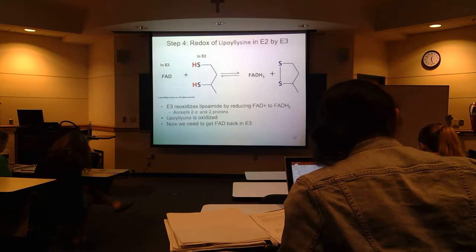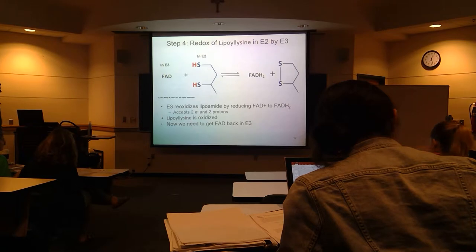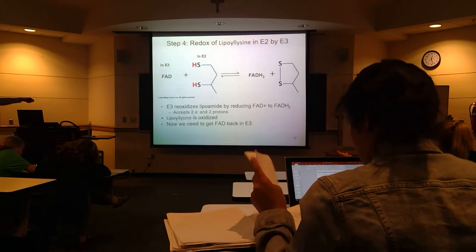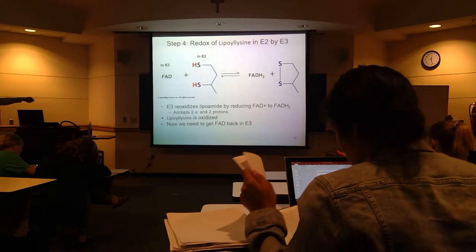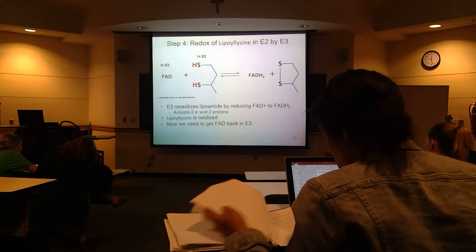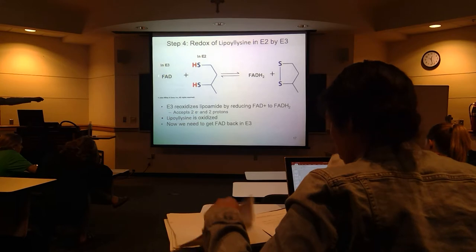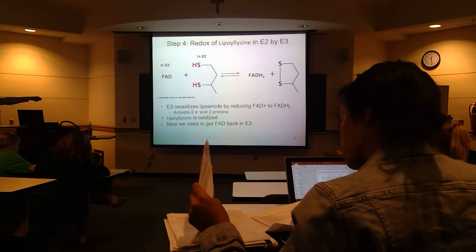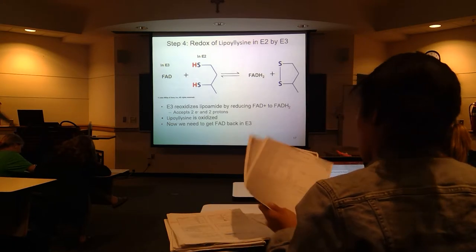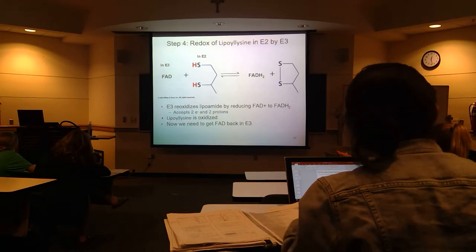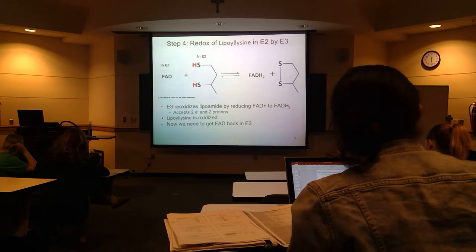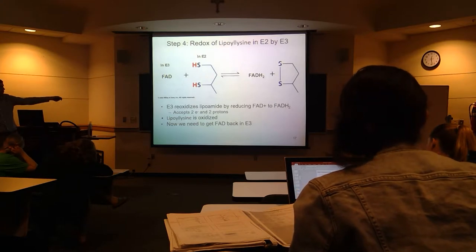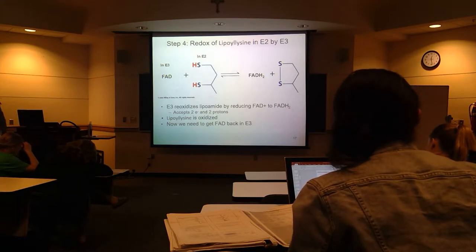We'll also see FADH2 in the citric acid cycle a little bit too — it also acts on a different enzyme in a redox step to accept electrons. So the next step then is that we have to reoxidize this lipoyllysine back. To do that, we're going to involve reducing FAD here to FADH2. So in E2 we have the lipoyllysine, and in E3 that's where the FAD is present. They're right next to each other in the complex, forming a joint active site between E2 and E3.